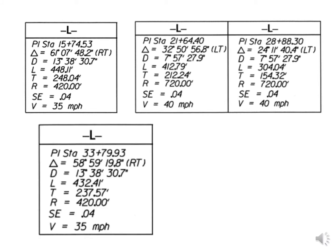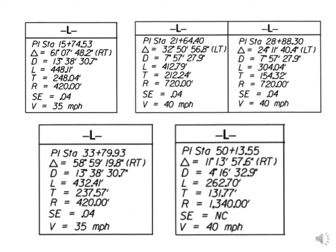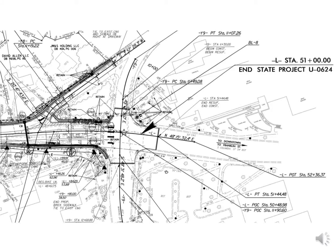If we pull all the curve information together from each plan sheet, we'll see that we actually have five curves on this center line alignment. We see several pieces of core information: the PI station, the Delta or deflection angle — which tells us whether the curve is moving to the left or to the right — the degree of curve denoted by D, which is related to the radius shown beneath it, the length of the curve, the tangent distance between the PC and the PI, the superelevation, and the design speed.